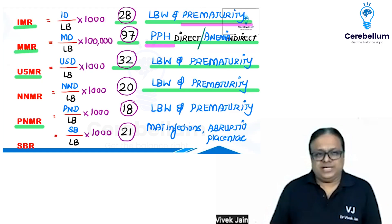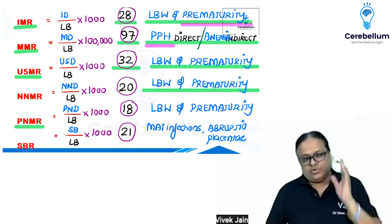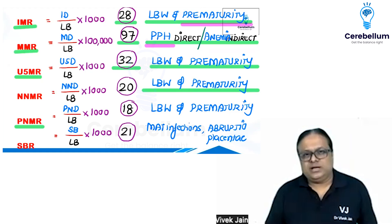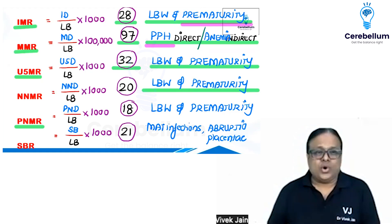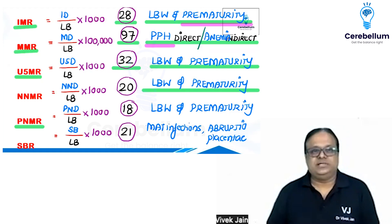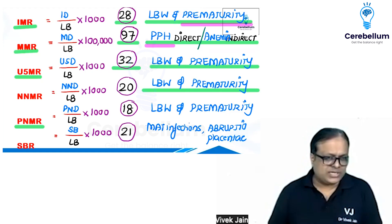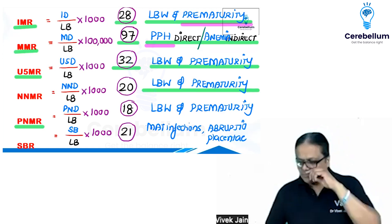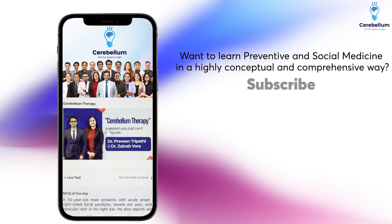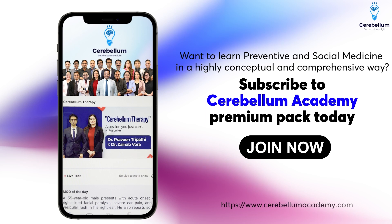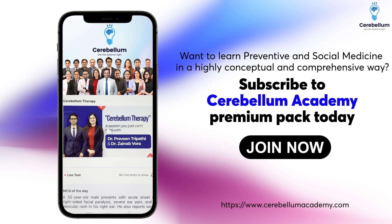Friends, the green and pink underlined points are the questions asked in your exam. All six formulas must be memorized. Nowadays, less calculation and more formula-based questions are asked, but these values and formulas must be memorized.